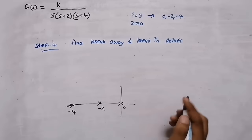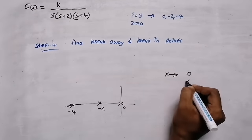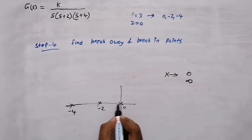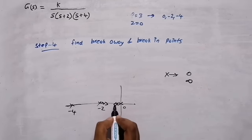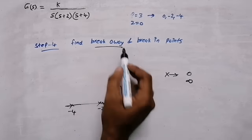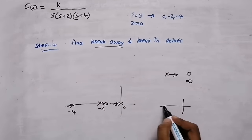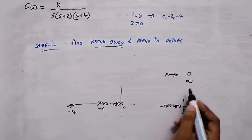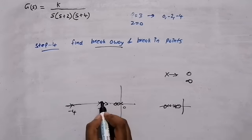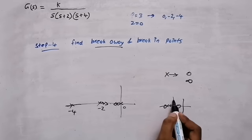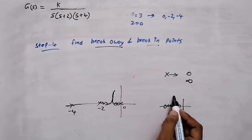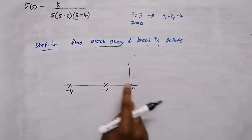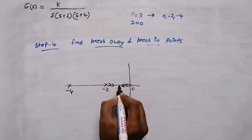In step four we need to find the breakaway and break-in points. Root locus always starts from poles and ends at either zeros or infinity. When there are adjacent poles, the branches start from each pole and meet at a point — that meeting point is the breakaway point, where they break away from the real axis. A break-in point is where branches arrive at the real axis from adjacent zeros.